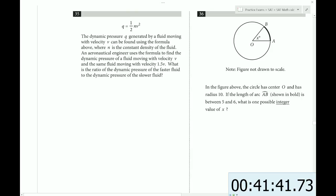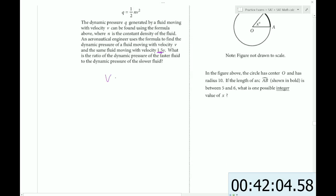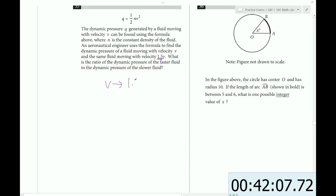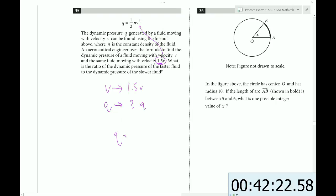Q = 1/2 NV². The dynamic pressure Q generated by a fluid with velocity V can be found using the formula above, where N is the constant density of the fluid. An aeronautical engineer uses the formula to find the pressure of a fluid with velocity V and the same fluid measured with velocity 1.5V. What is the ratio of the dynamic pressure of the faster to the slower? So what we want to do is we want to apply a stress to this system. We want to change V into 1.5V and then measure the response on Q. We want to know what happens to Q when we do that. So what we do is we plug in 1.5V into the formula. So we have Q = 1/2 times NV².